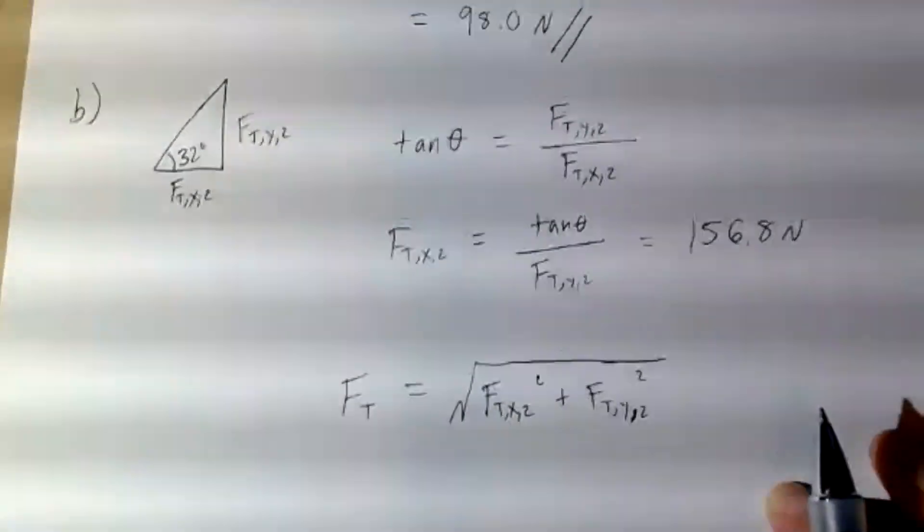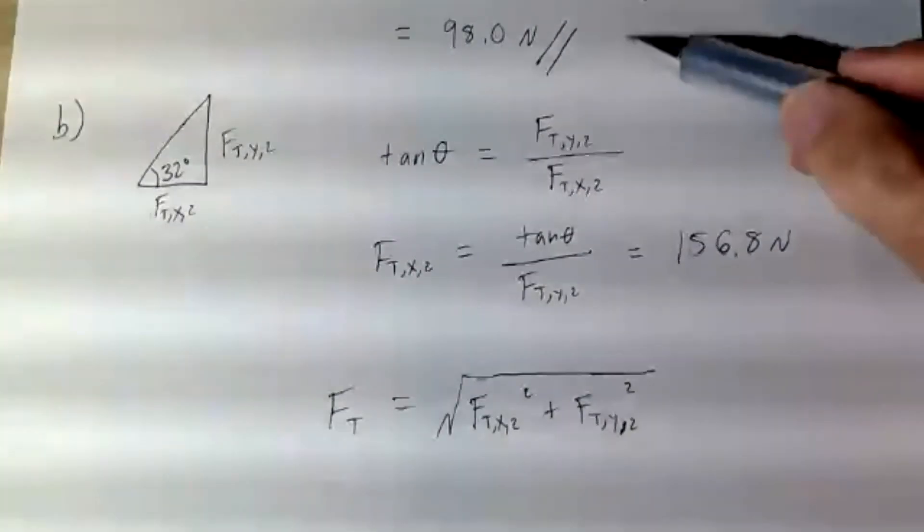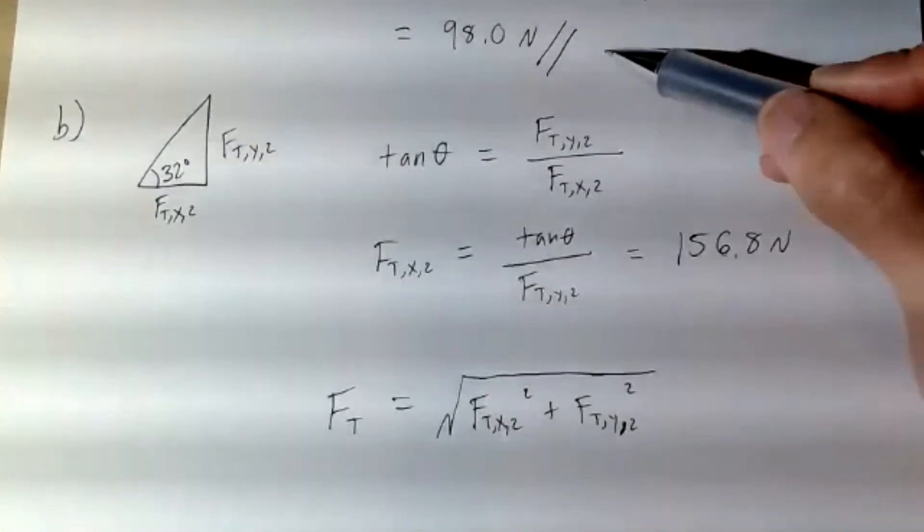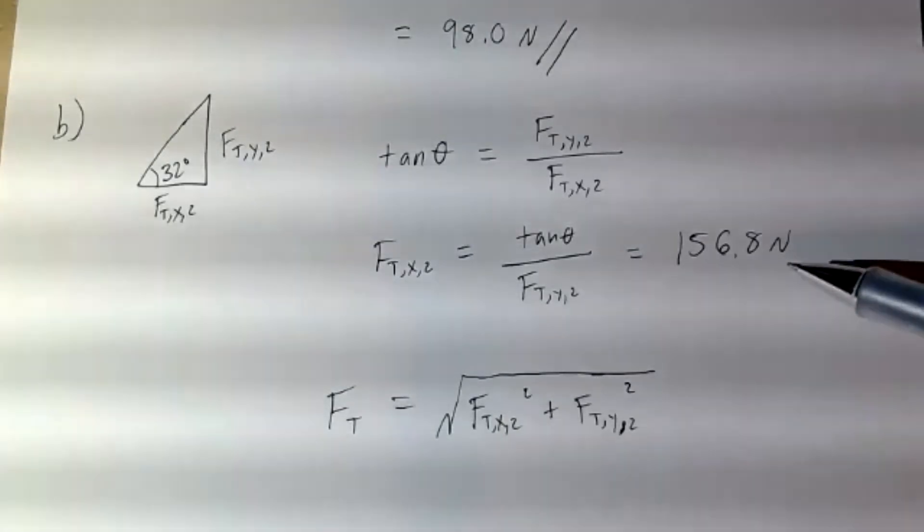And so now we know both of the values. The y component of the tension of the rope is 98 newtons, and the x component of the tension of the rope is 156.8 newtons.